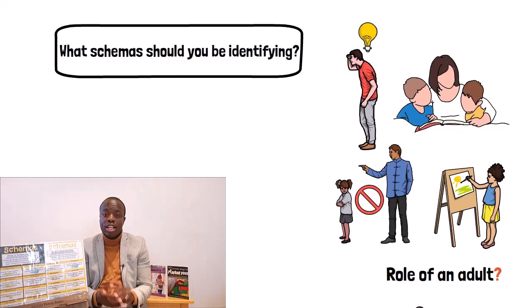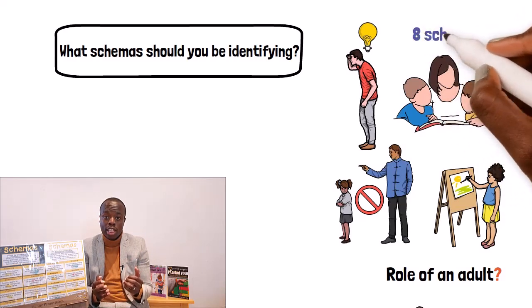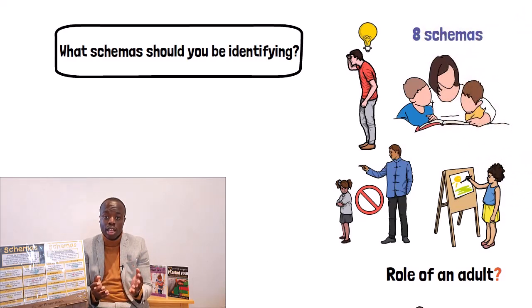Well there are numerous, literally numerous. Though the general consensus amongst theories is that there are eight key schemas that children are more likely to demonstrate.